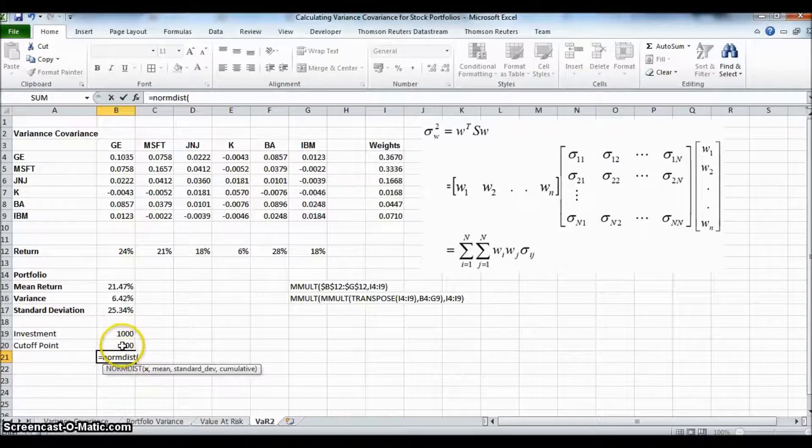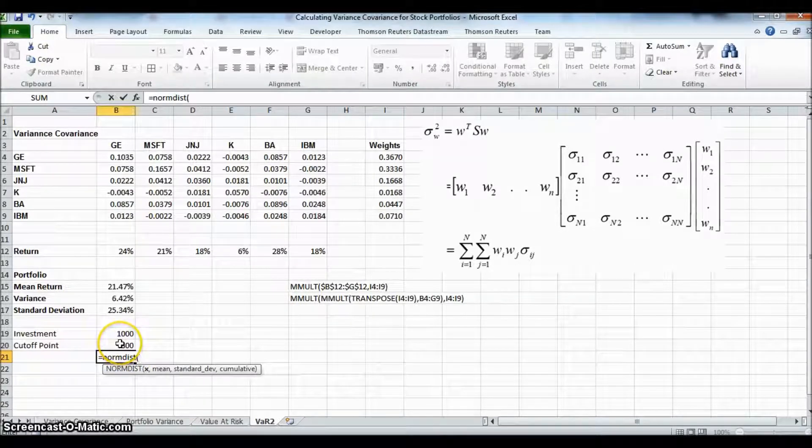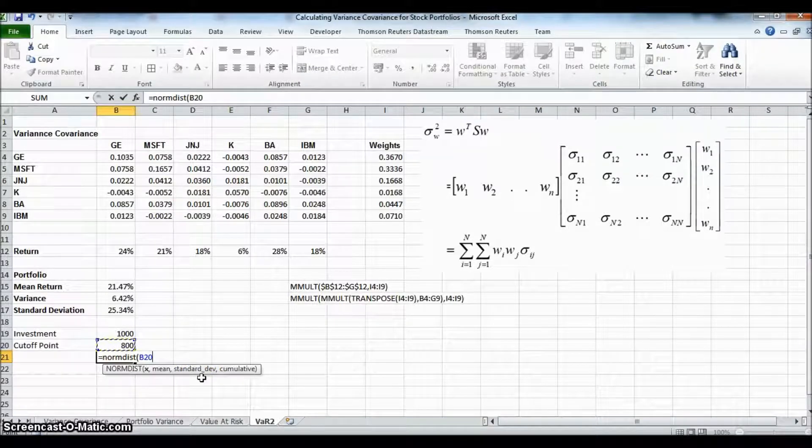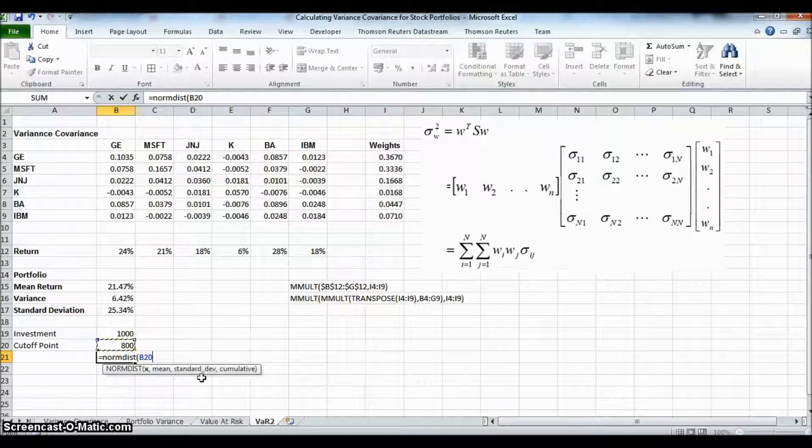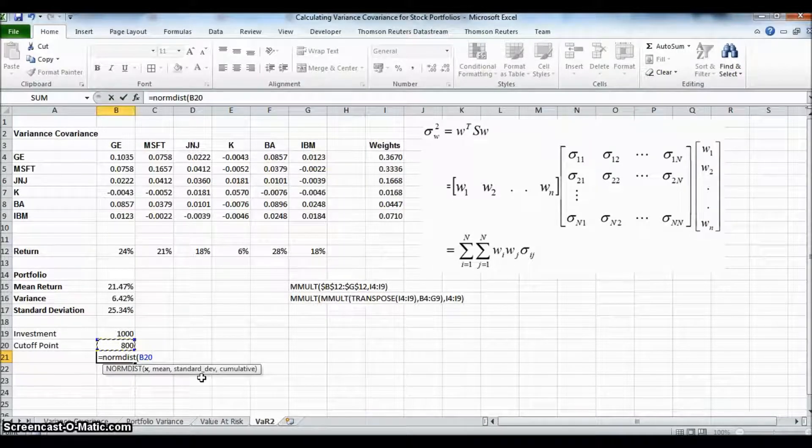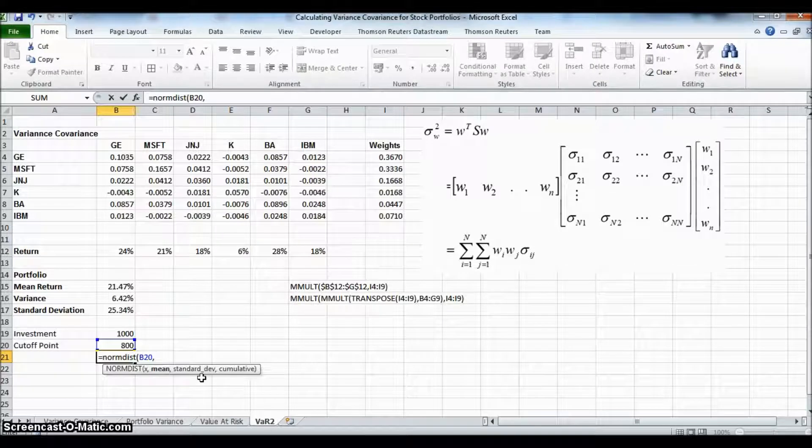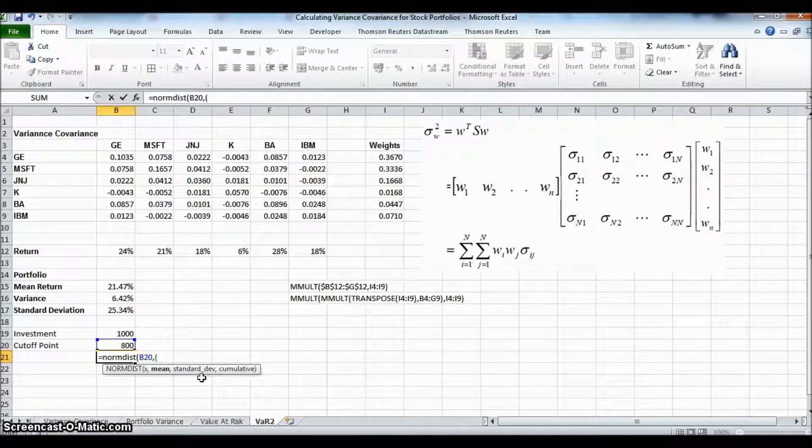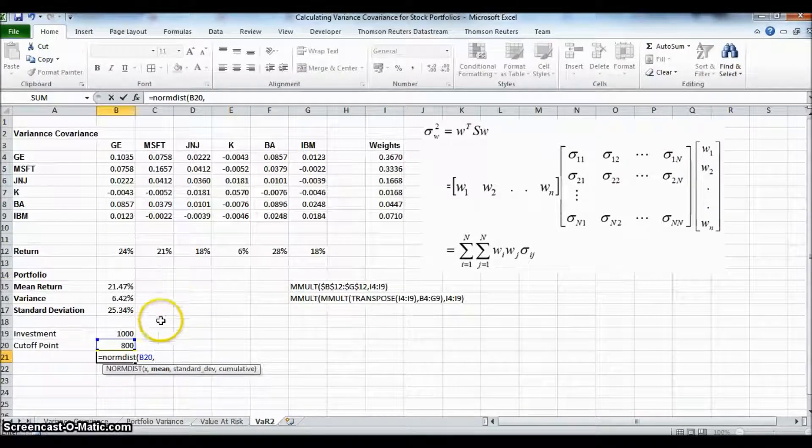And we say, okay, the mean level is $800. So the value, what we're considering is the probability that the value of the investment will be less than $800. Where we initially started with a value of $1,000.